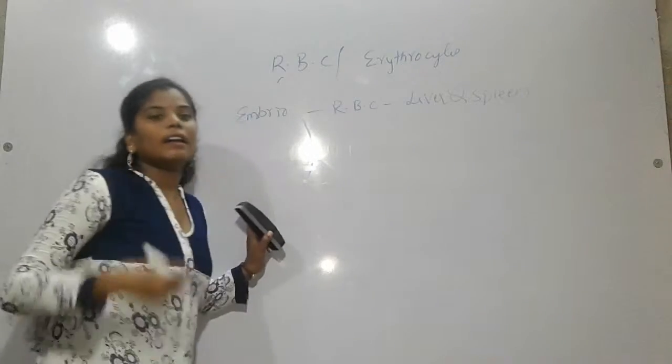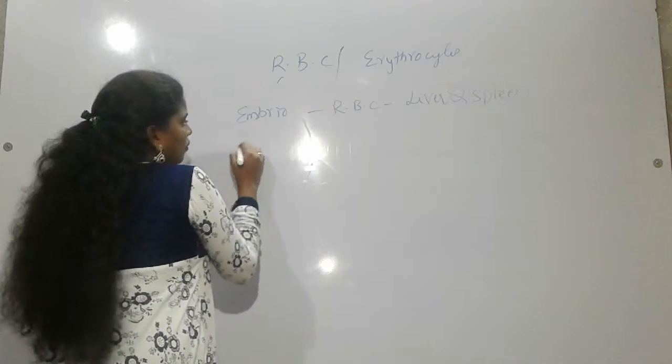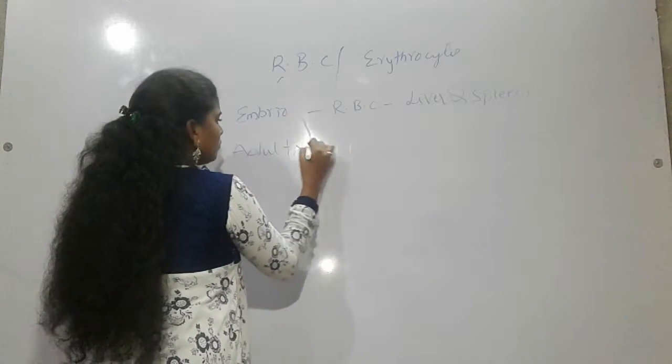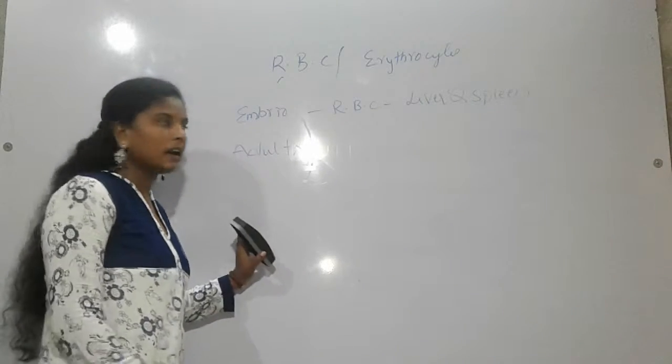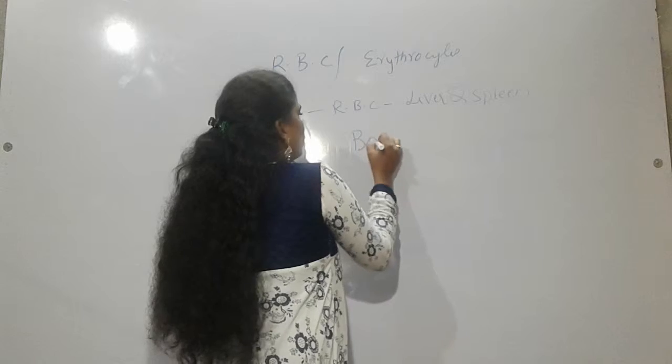For adults, where the RBC will be forming? For adults, the formation of RBC will occur in bone marrow.